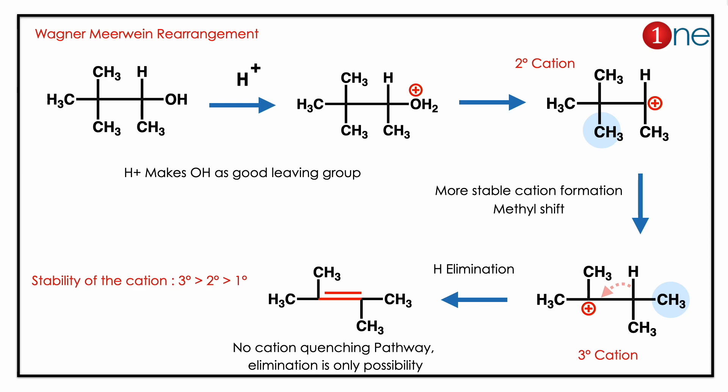Looking at the alcohol in acidic conditions, you might recognize the Wagner-Meerwein rearrangement. The first step makes the alcohol a good leaving group, so a carbocation forms by water removal. The cation formed here is a secondary carbocation.